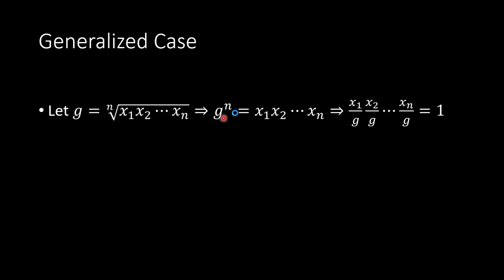Then we distribute g over each. It becomes x1 divided by g, x2 divided by g, all the way to xn divided by g. This product has to be 1 because you move this to the right-hand side.